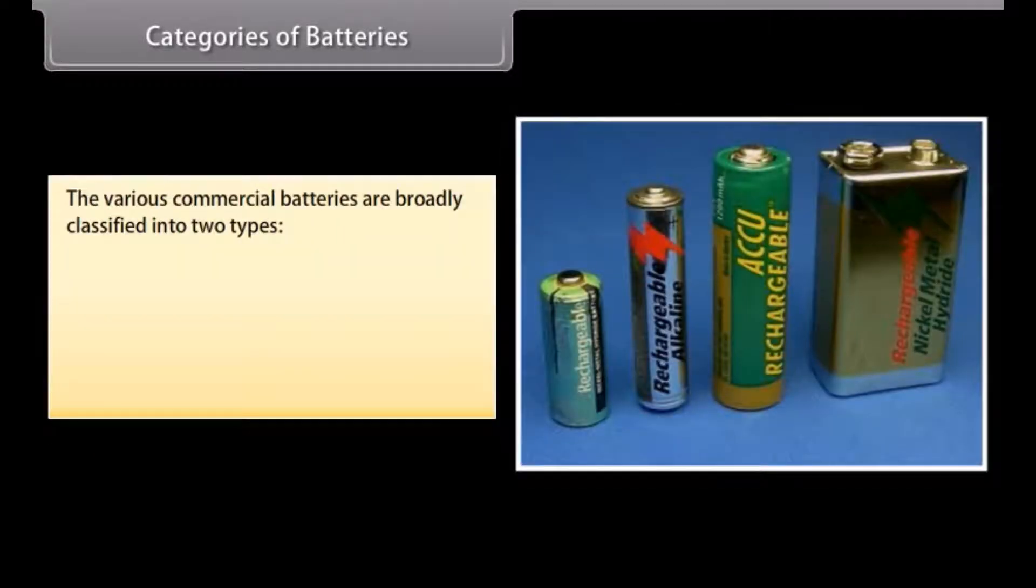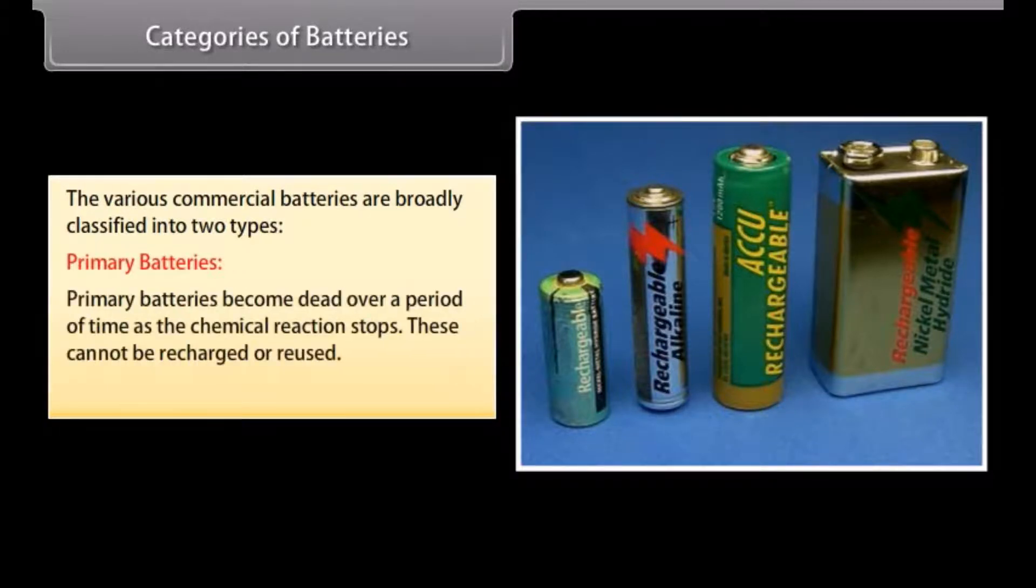Categories of batteries. The various commercial batteries are broadly classified into two types. Primary batteries become dead over a period of time as the chemical reaction stops. These cannot be recharged or reused. For example, dry cell and mercury cell.